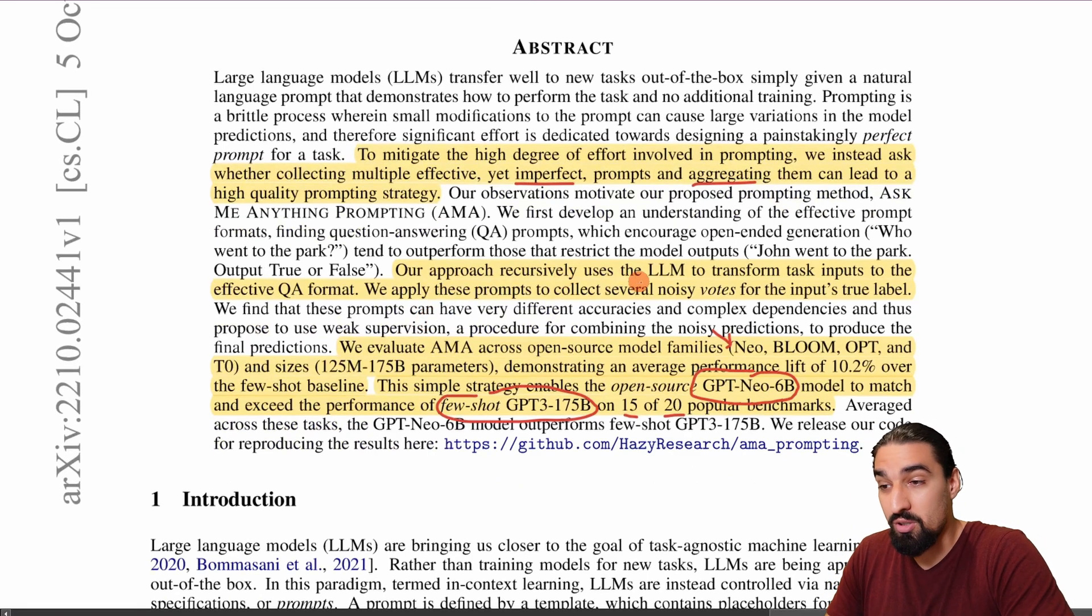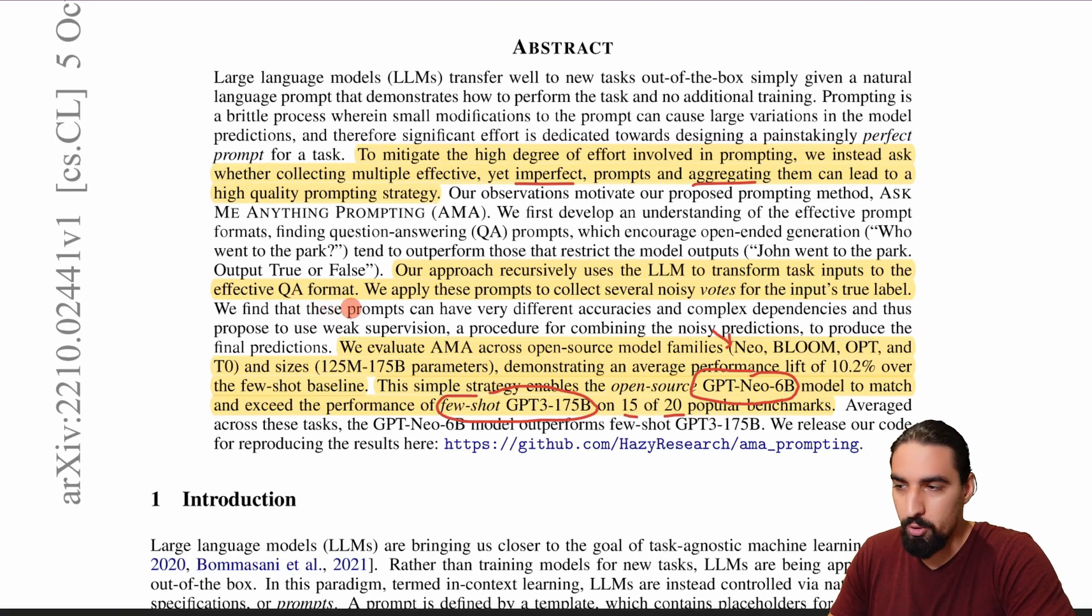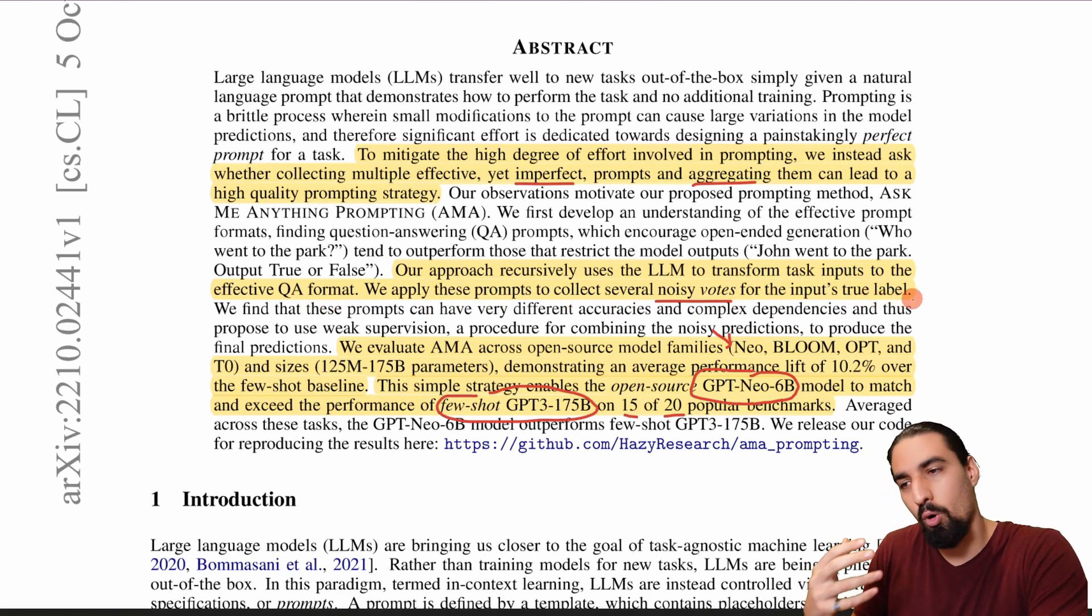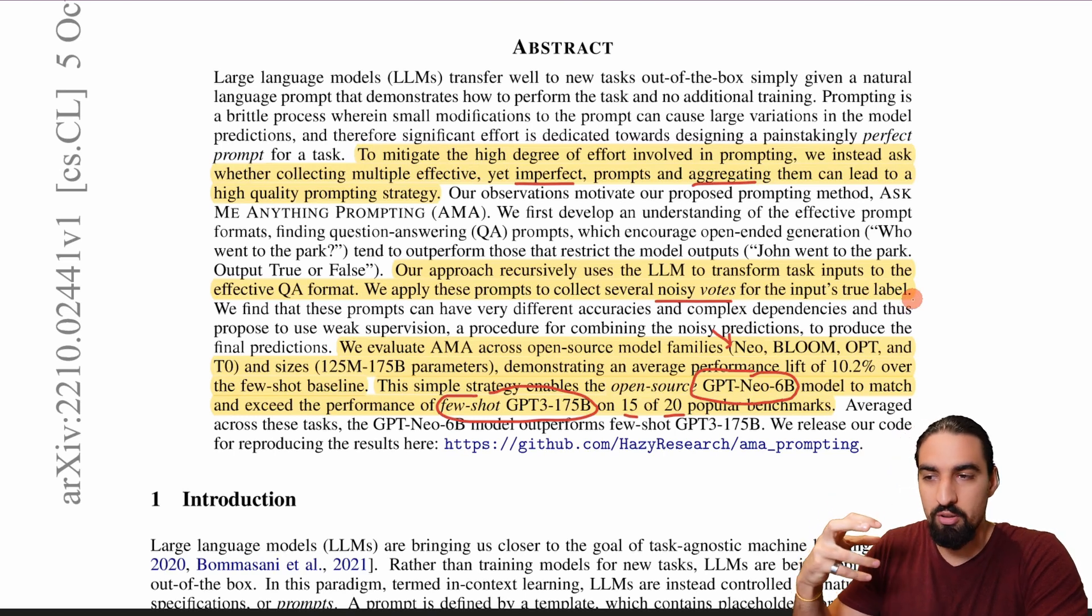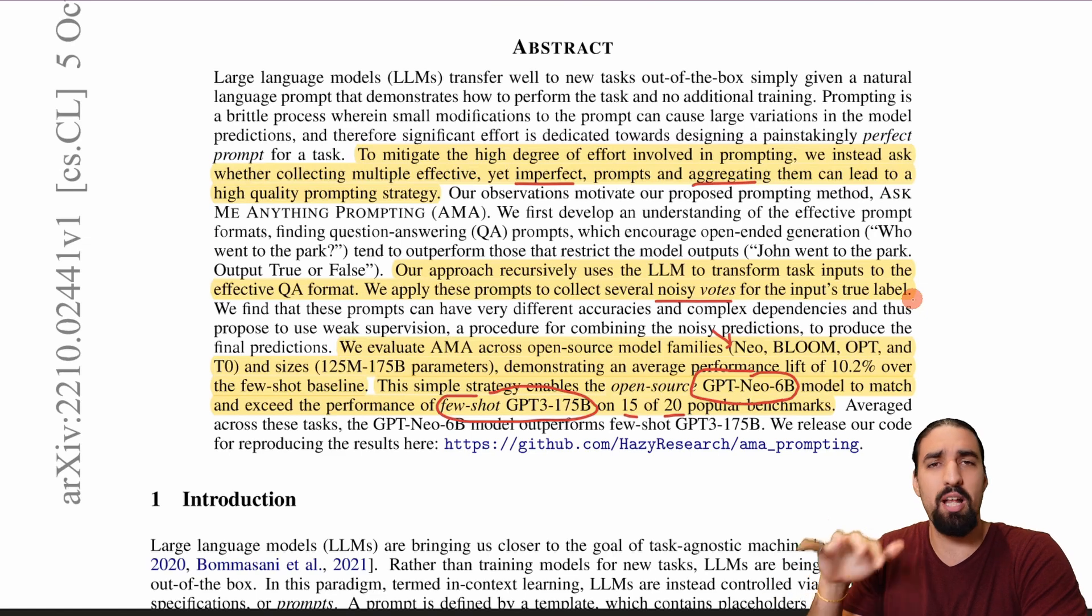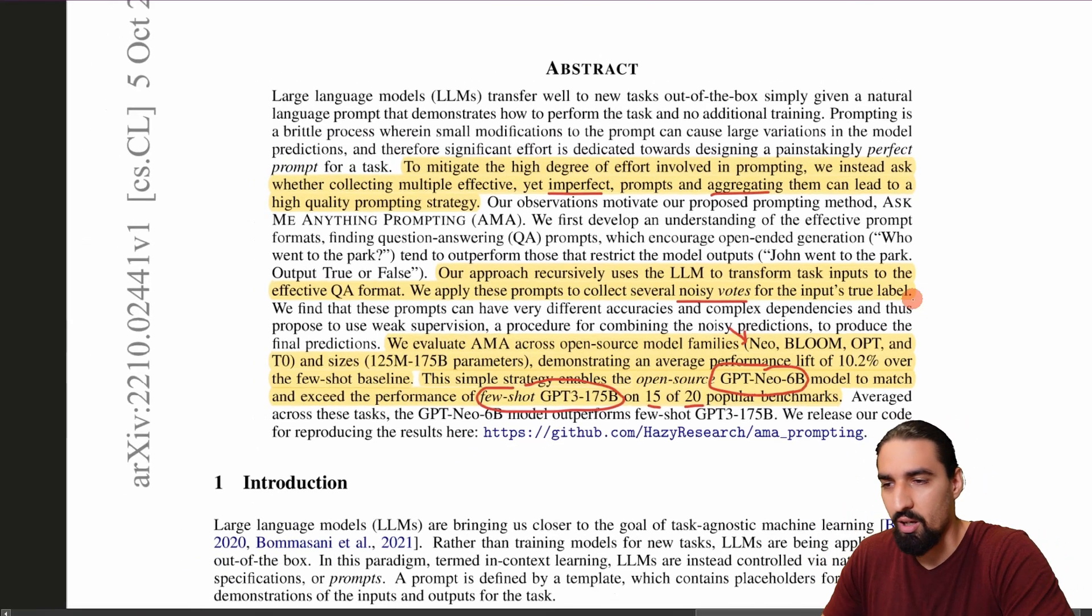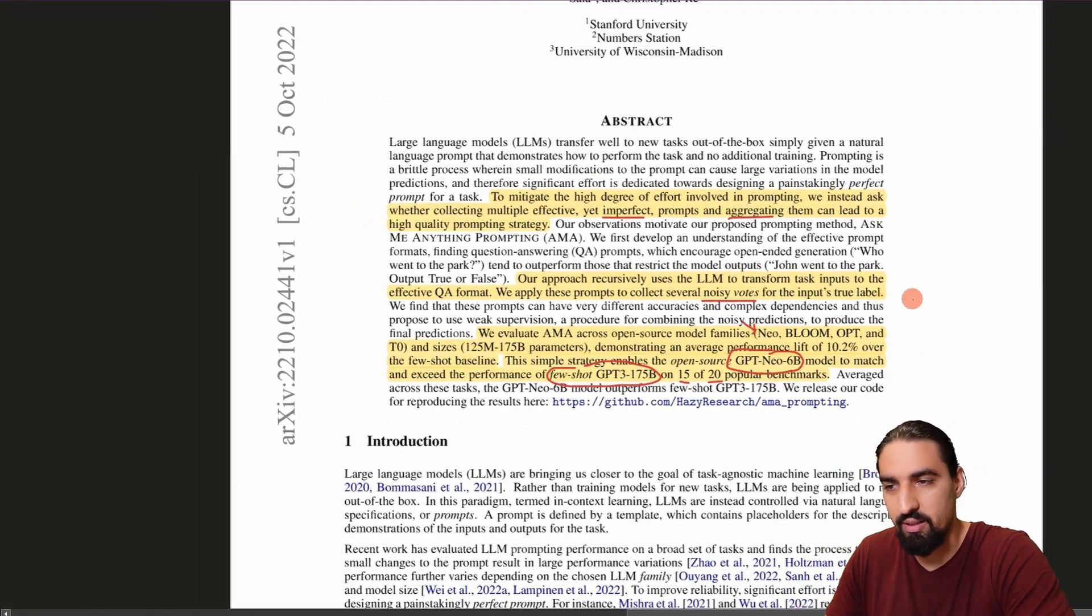And that's exactly what this approach does. So our approach recursively uses the LLM to transform task inputs to the effective QA format. We apply these prompts to collect several noisy votes for the inputs true labels. So you can see already it's gonna be some form of aggregating the outputs of imperfect prompts and what they do is not majority voting they use something a bit more delicate. We're gonna see the details a bit later.